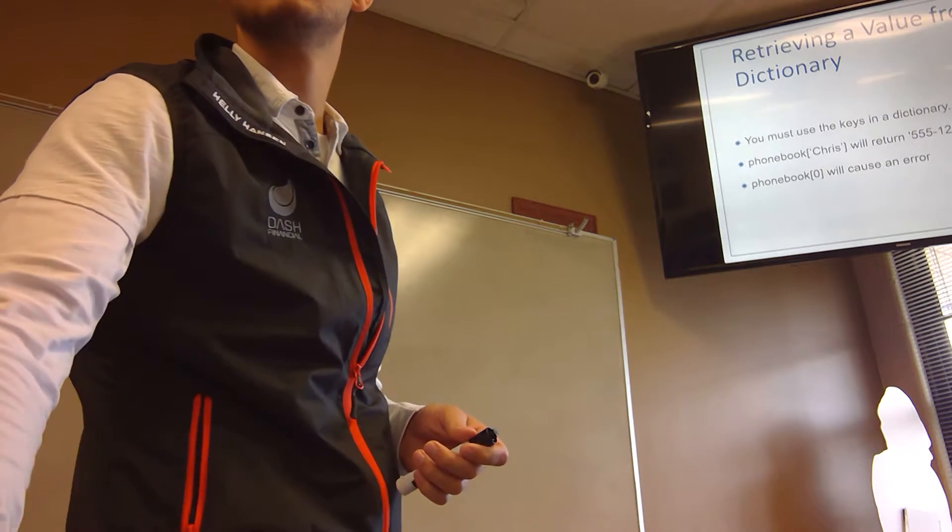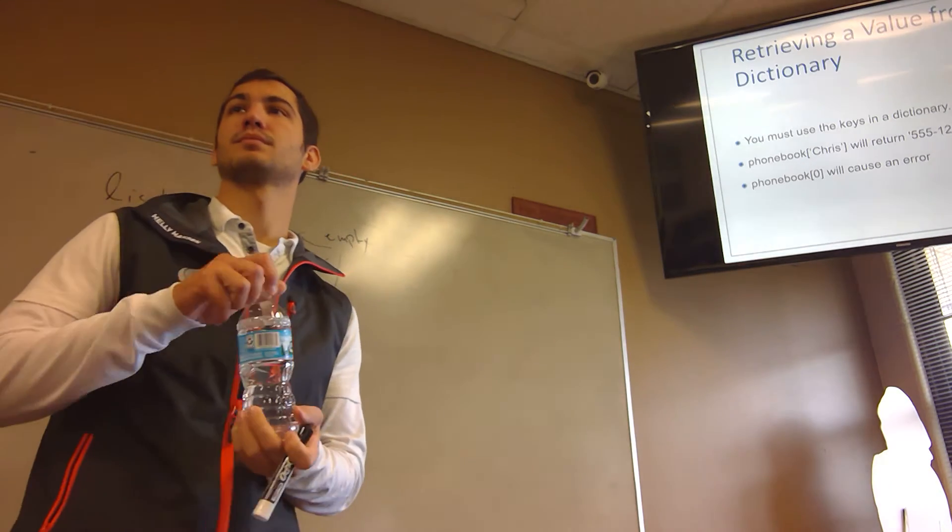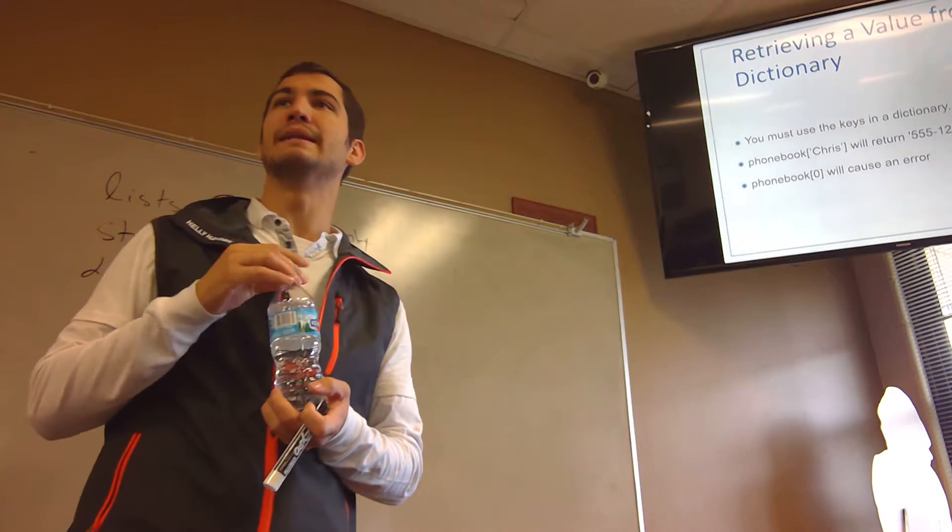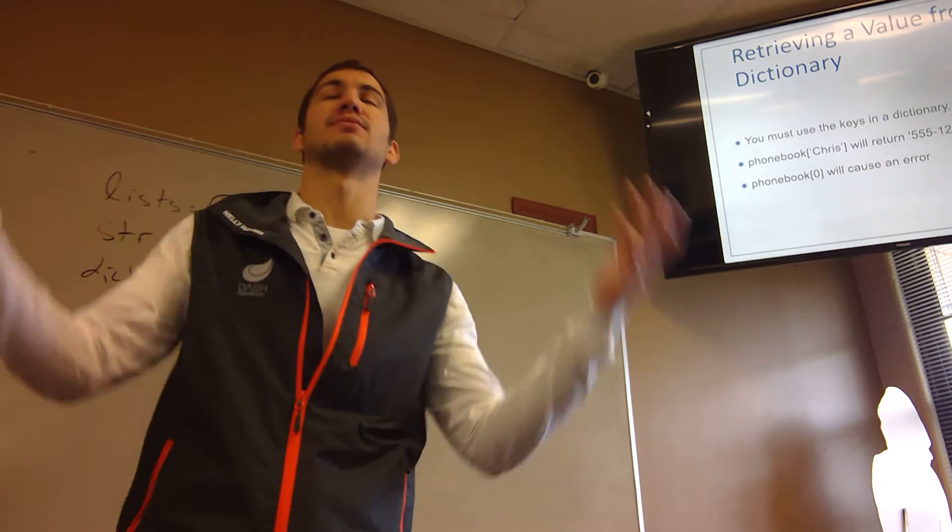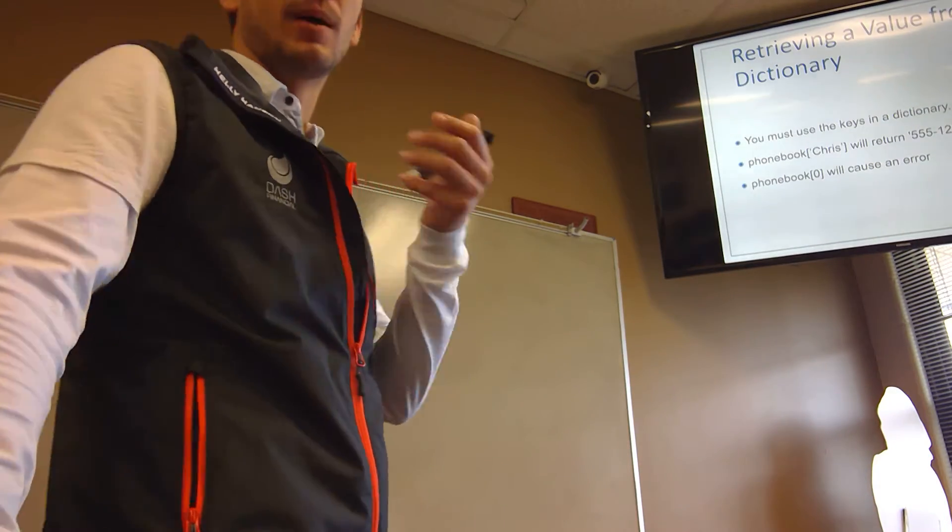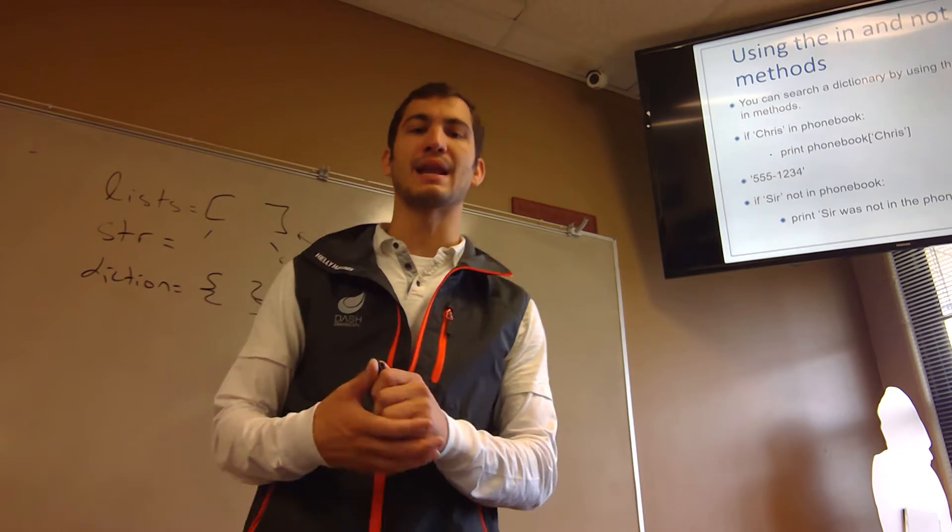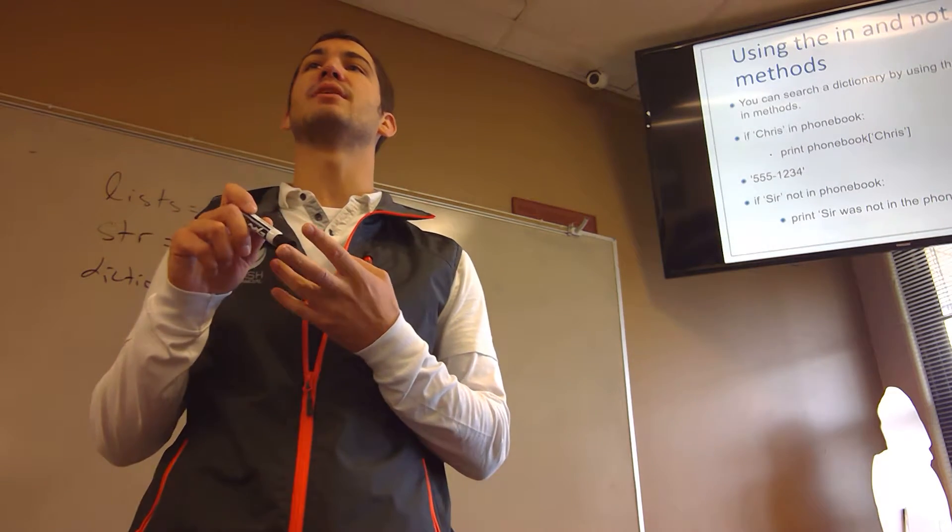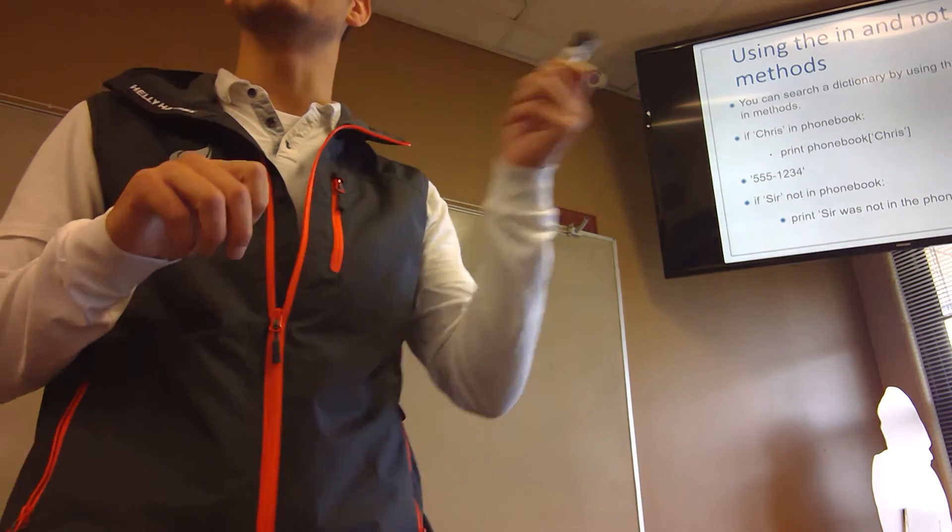What are the three methods you could use? You can search a dictionary by using the in and not in methods. So if Chris in dictionary, print Chris's phone number. If Chris not in phonebook, print Chris isn't in the phonebook. I thought it was three? Yeah, well it is three blanks but it's two things. Phonebook zero will cause an error. We'll get that key error value. Using in and not in - this is very similar to lists and very similar to strings. Are there any questions on this?